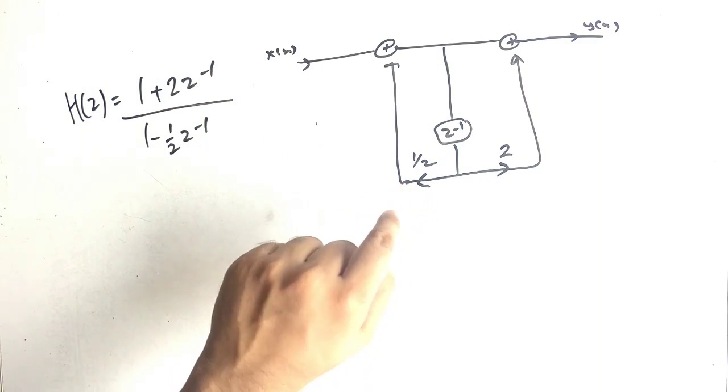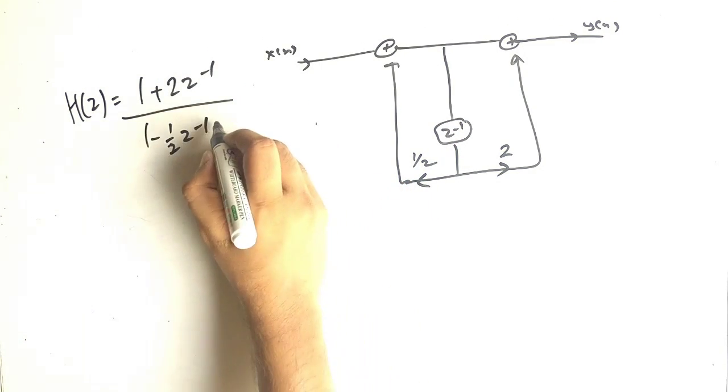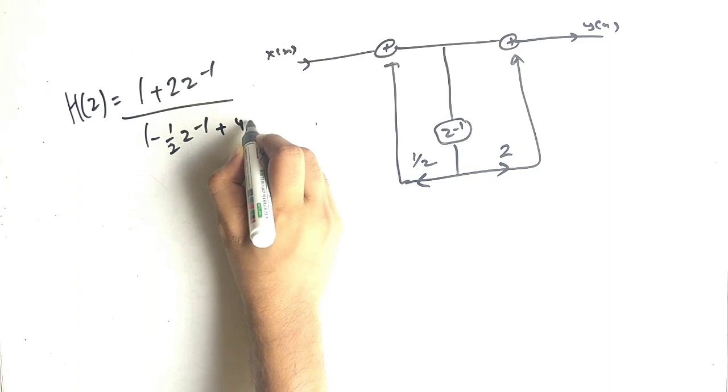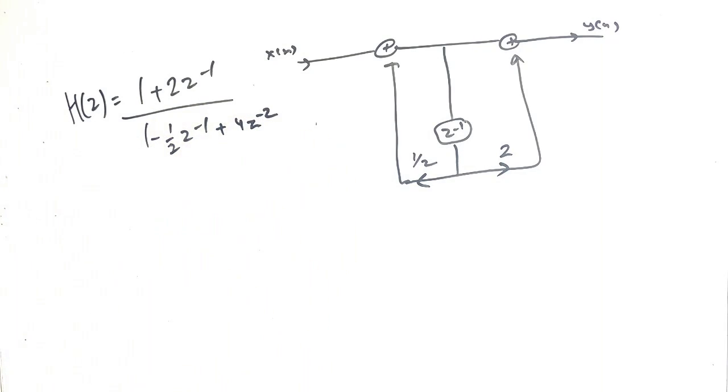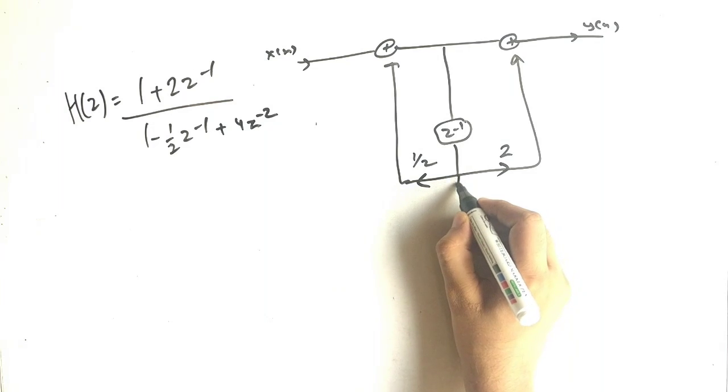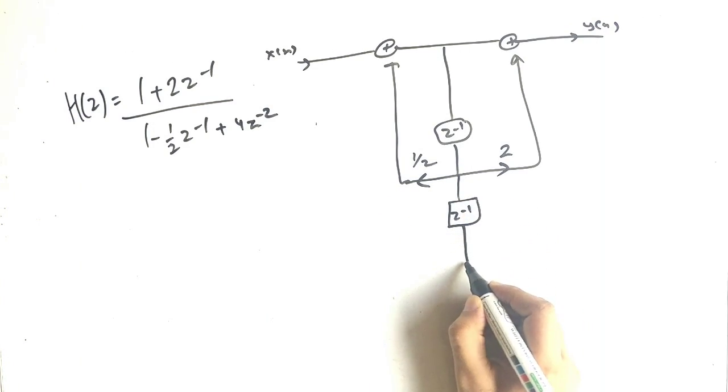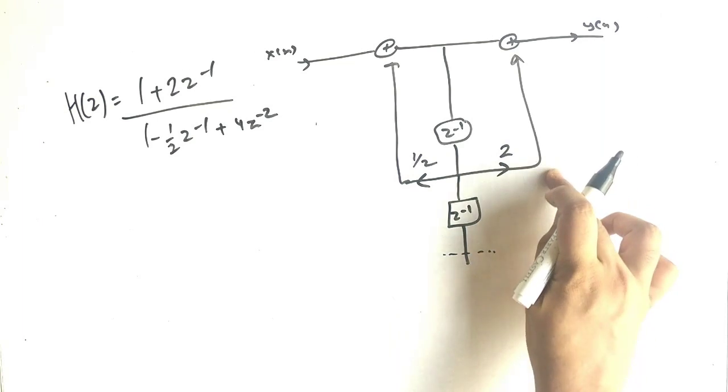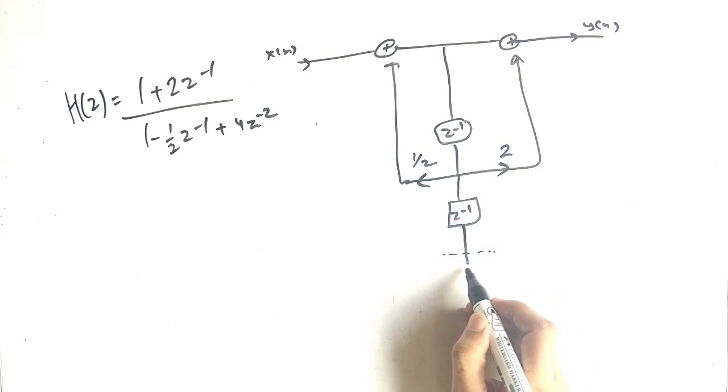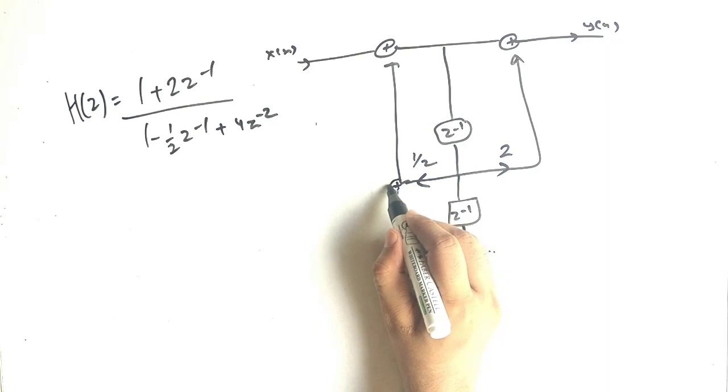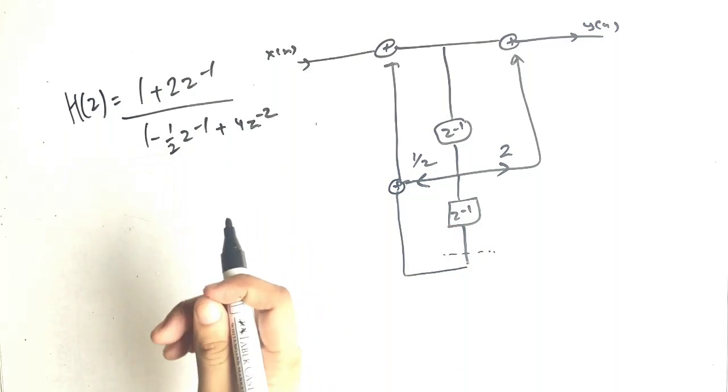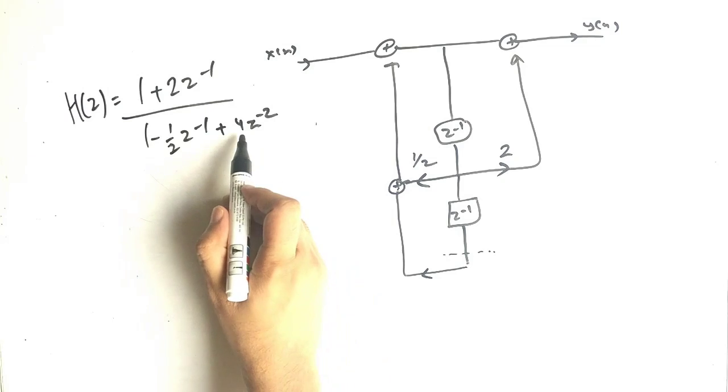Now let's say I add plus 4z raise to minus 2 here. What will happen? Z raise to minus 1 will extend because here we will get z raise to minus 2 term and there is no zero, so leave as it is. Whereas there is pole here, so addition because these two terms are added and the multiplier is 4, so it will change its sign to minus 4.